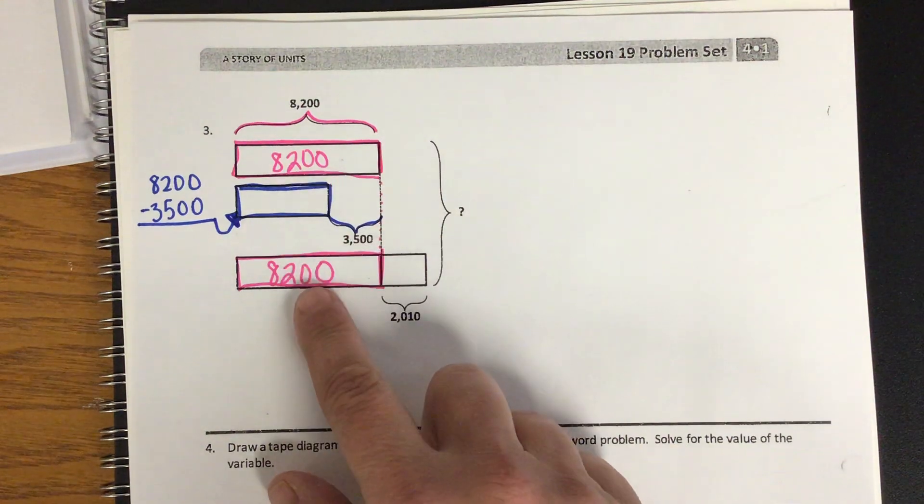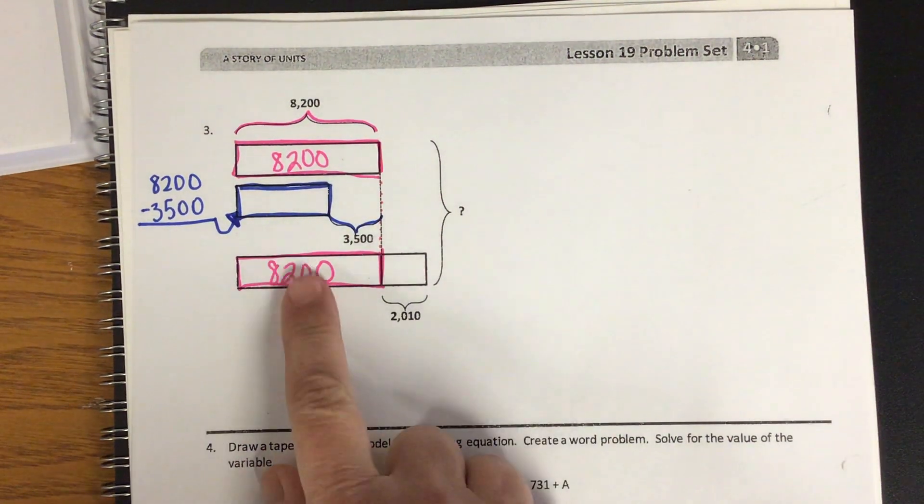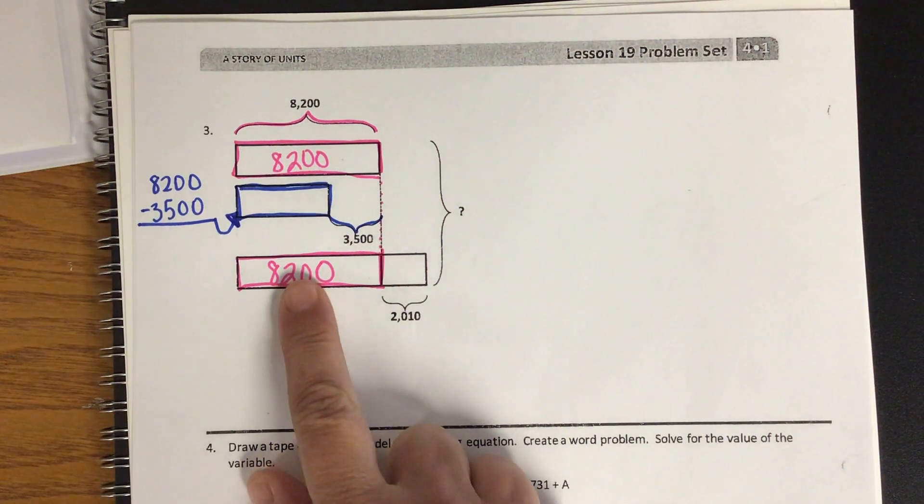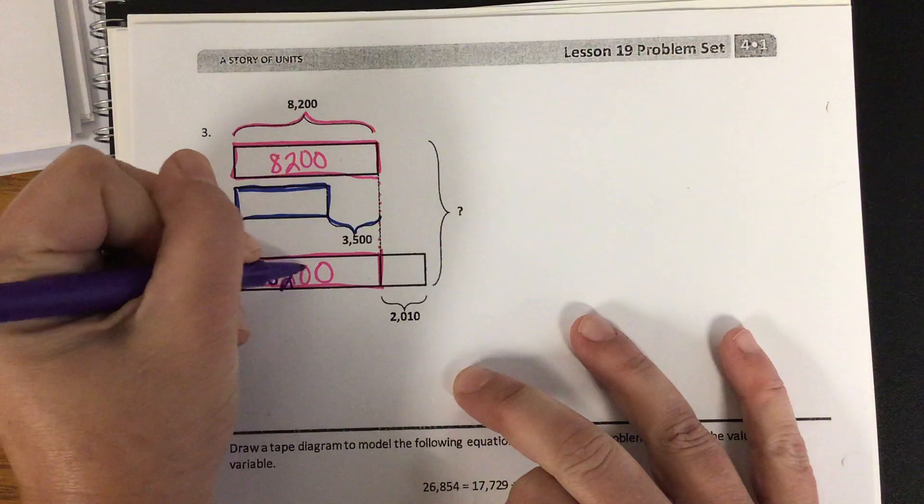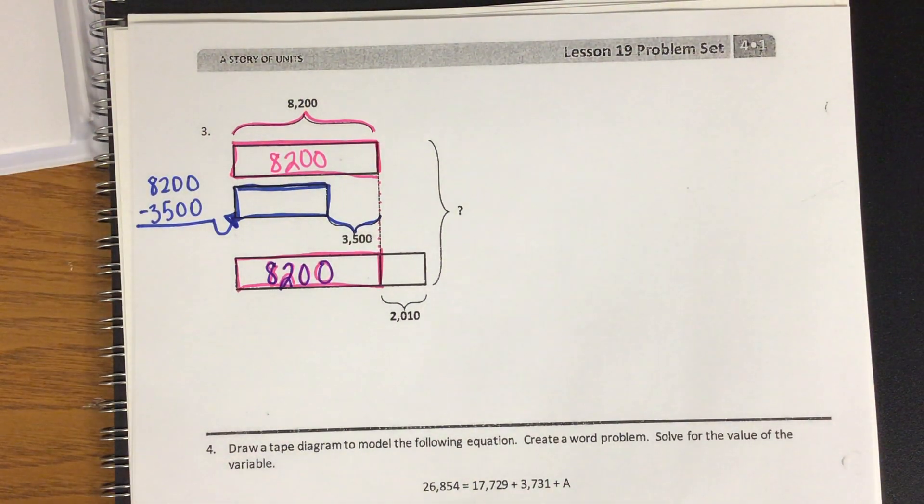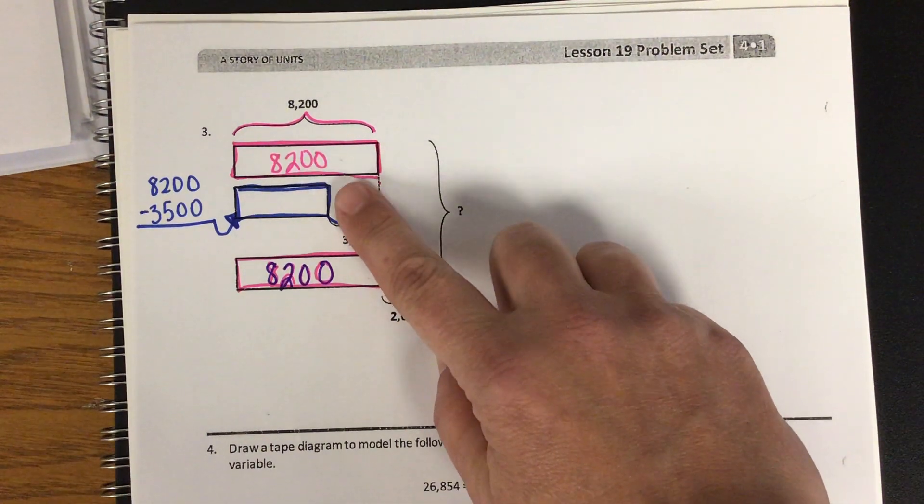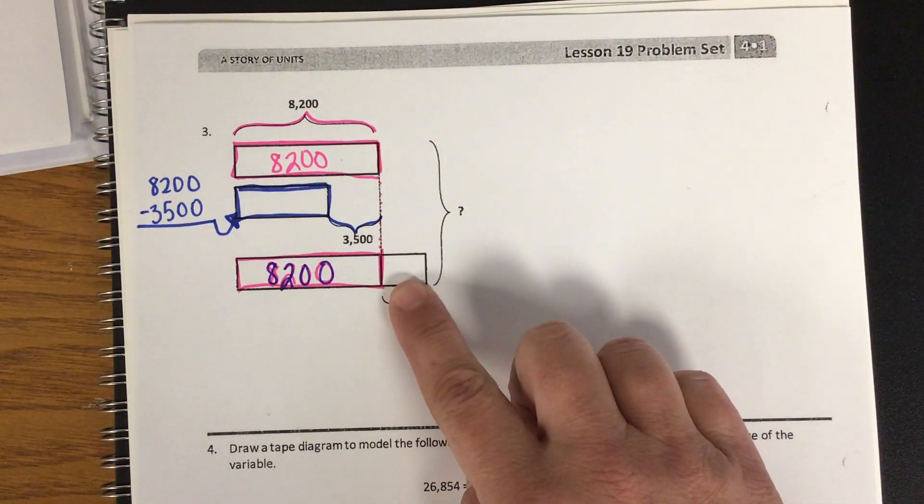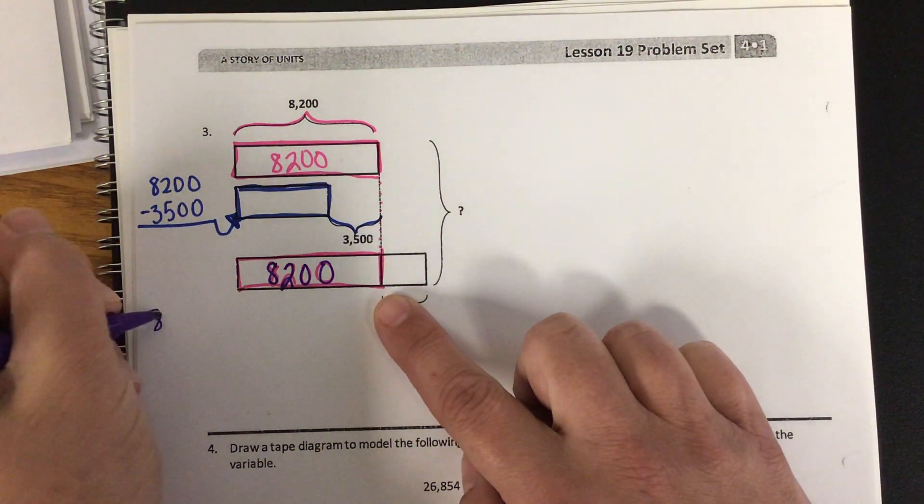Then I come down here. I already know that this part of the tape diagram is worth 8,200, whatever the unit happens to be, because you have to write the math problem. And then, if you remember in our math, we talked about how sometimes it's fewer, but sometimes it's more. So I have to figure out how much more. So here's the next math problem.